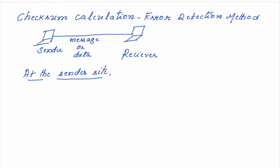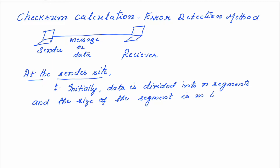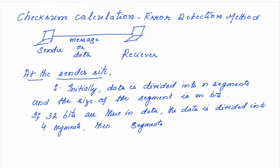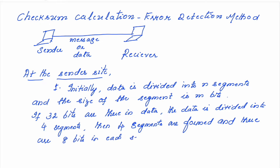Initially, the message is divided into n segments. The first step is: the message or data is divided into n segments, and the size of each segment is m bits. Suppose, for example, if 32 bits are there in the data, the data is divided into 4 segments. Then 4 segments are formed and there are 8 bits in each segment. This is the first step that the sender does.